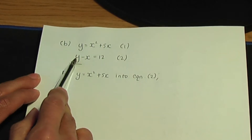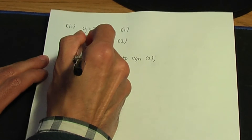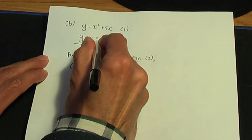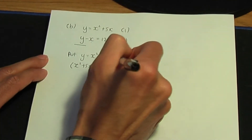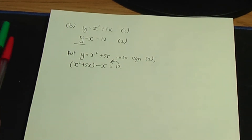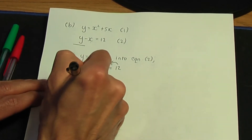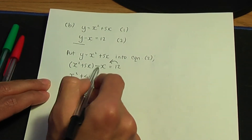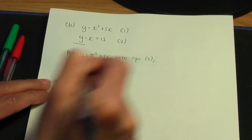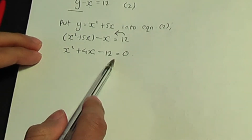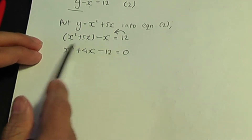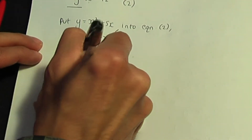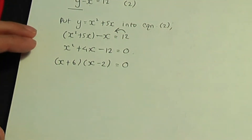Replacing y in equation 2, we get x squared plus 5x minus x equals 12. Simplifying 5x minus x gives 4x, and moving 12 to the left gives x squared plus 4x minus 12 equals 0. This quadratic is factorisable — the two factors are x plus 6 and x minus 2.